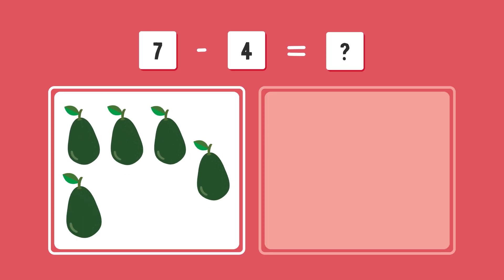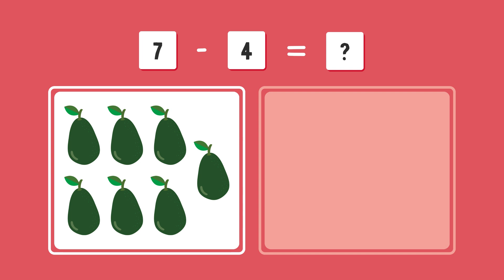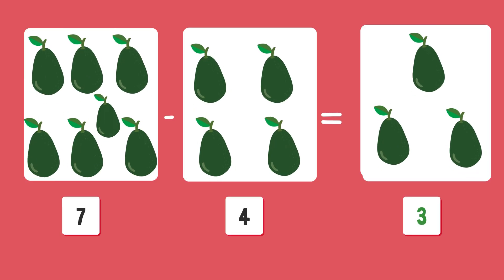And now, what is seven minus four? You're almost there. Correct answer is three.